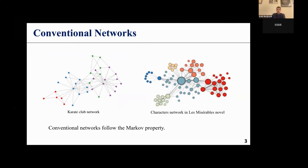These networks all obey the Markov property, that is, whether there is a relationship between any two nodes on the graph depends only on themselves and has nothing to do with other nodes.